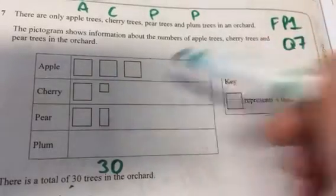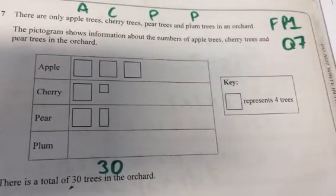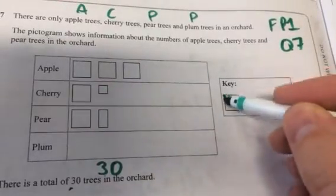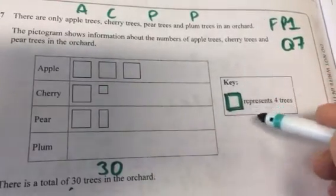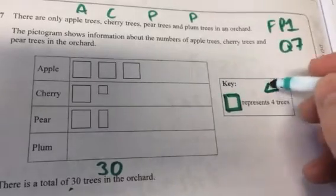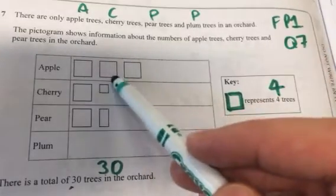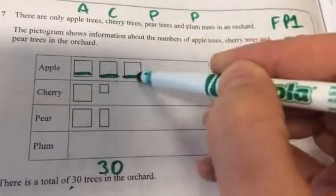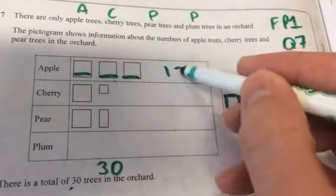Let's start by going, how many apple trees are there? There are 8 apple trees because on the key there's 4 trees. So the key shows that that square represents 4 trees. And you said how many for apple? 8. No, 12. There's 1, 2, 3, 4 squares so that's 12.